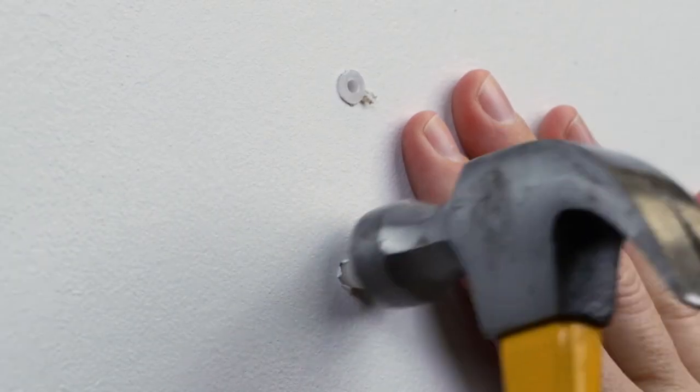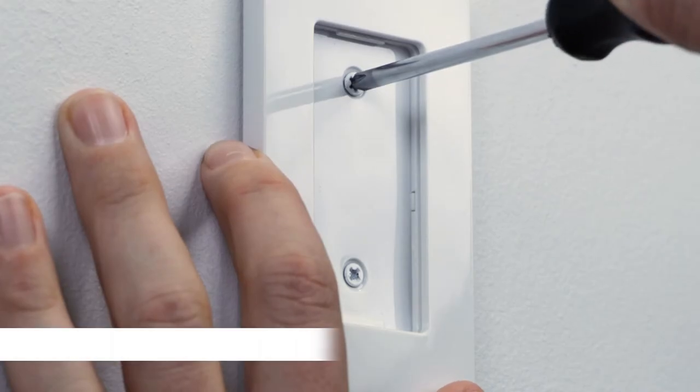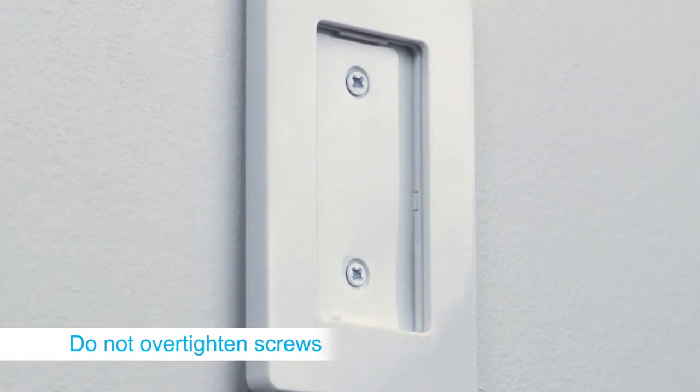If installing the remote on drywall, gently tap the anchors into the pilot holes. Secure the wall mount with the screws and replace the remote.